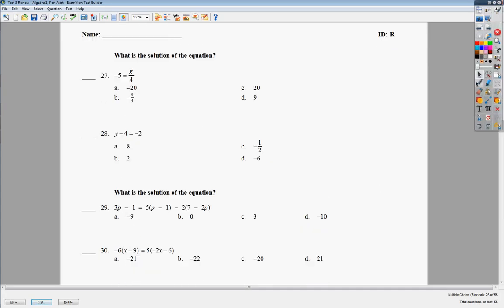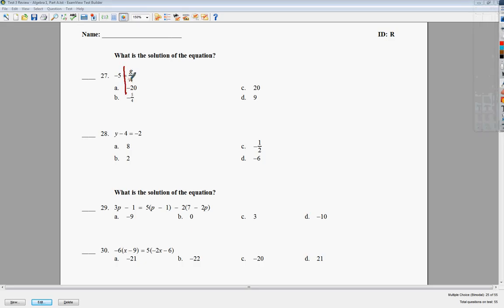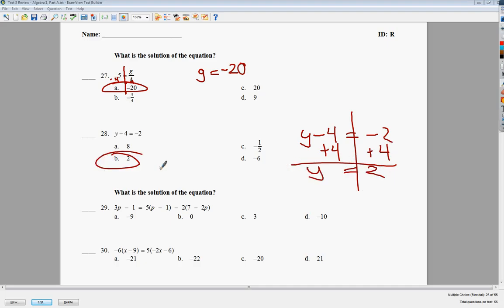27 and 28 are kind of like almost freebies. I just want to give you some that you can get right very quickly. These are one-step equations. g is divided by 4. To get rid of divide by 4, I need to multiply by 4 on both sides. So that would be g is equal to negative 5 times 4, which is negative 20. So the answer to number 27 is A. Number 28, you need to get rid of minus 4. Of course, you add 4. And you end up with y is equal to positive 2. So the answer to number 28 is B.